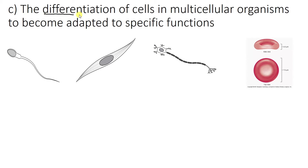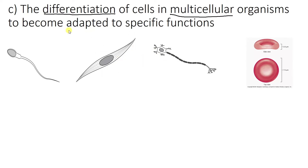Now this word differentiation — basically what it means is where what we saw before with our animal cell turns into one of these types of cells. Because as humans, as organisms, if you are multicellular, which means you have lots of different types of cells, we have different cells to do different functions and we need our animal cell — our bulk standard animal cell — to become these different cells to do these different functions.